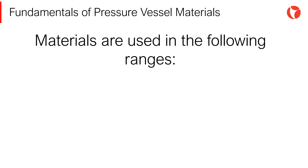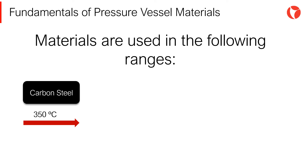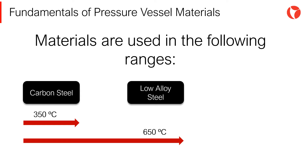Depending on the design temperatures of equipment, a particular material will be selected that is able to withstand the maximum temperatures prevailing in the process. As a general rule, materials are used in the following temperature ranges: up to 350 degrees, carbon steel; up to 650 degrees, chromium-molybdenum alloys.